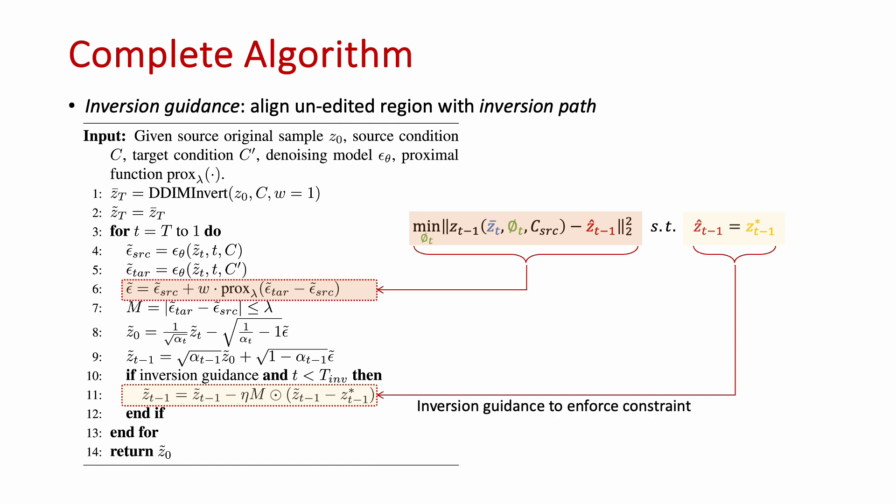It can be easily seen in the algorithm box. We're basically adding two lines. First, we replace null with source prompt embedding and add a proximal operator. Second, we add a one-step gradient descent on the obtained latent Z T minus 1. Note that if step size eta equals 1, we're replacing Z tilde with Z star. This replacement is performed on the regions indicated by a binary mask. This mask is obtained from proximal operator. The mask indicates which part we do not wish to edit or change.